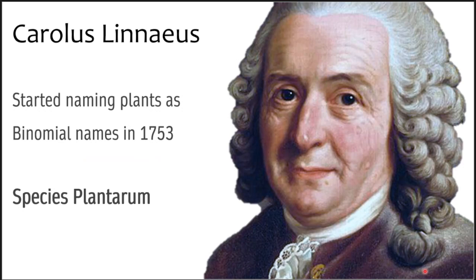Who started this, and why? This particular system dates back to the 17th century. Carolus Linnaeus, the father of taxonomy, started naming plants with binomial names in 1753. He used this system in his book called Species Plantarum, where he described all the plants with binomial nomenclature for the first time.